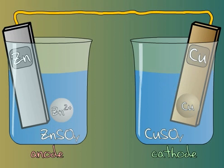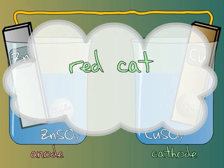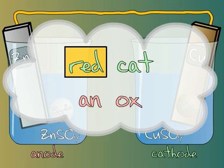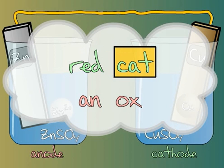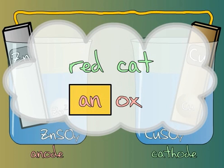We use the mnemonic RED CAT AN OX to remember that reduction takes place at the cathode, while the anode hosts oxidation.